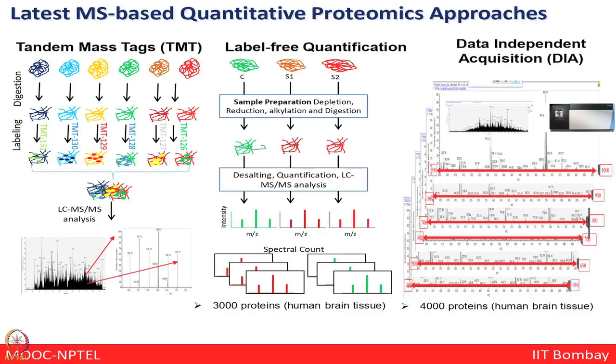The latest approaches for quantitative proteomics include iTRAQ — isobaric tagging for relative and absolute quantification — which labels peptides on their N-terminal side. A similar approach is tandem mass tags or TMT, which again labels peptides from the N-terminal side. Additionally, one can look at relative abundance in a label-free manner known as label-free quantification, or the more recent data-independent acquisition (DIA), where you look at a specific m/z region from 400 to 1000 to generate much higher resolution spectra.